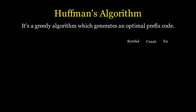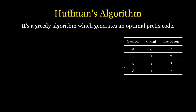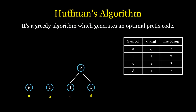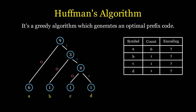Let's take an example where the frequency distribution is skewed. Take all the symbols along with their counts in a row. Connect two nodes at a time whose counts are minimum. The count of the new node should be the sum of its child nodes. Repeat this process until you exhaust all nodes and a root node is obtained. Label the left branch from each node as 0 and the right branch as 1. You've just created a Huffman's tree.